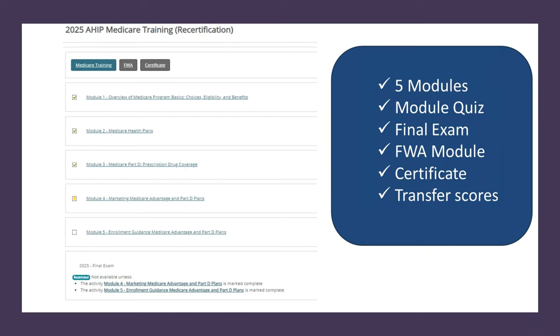Once you log into AHIP — you'll have to create an account — you're going to notice there are five different modules to complete. After each module, there is a short quiz you have to take and pass before you can move on to the next one. Once you've completed all five modules, there is a final exam you must pass in order to unlock the fraud, waste and abuse module. Once you go through the fraud, waste and abuse module and complete it, you will be issued a certification.